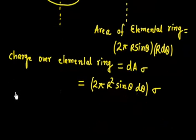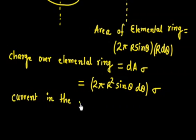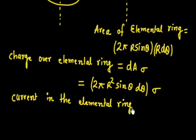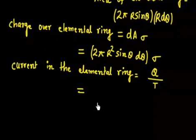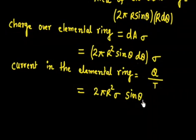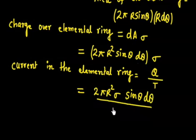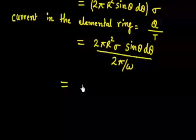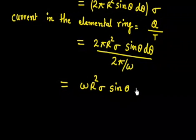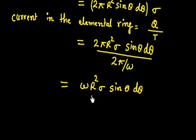The current in the elemental ring is dI = dq divided by time period. The time period is 2π/ω. So dI = 2πR²σ sinθ dθ divided by (2π/ω), which simplifies to dI = ωR²σ sinθ dθ.